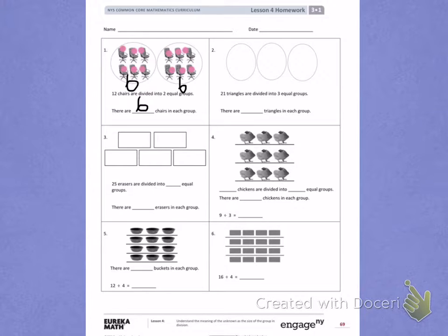Number 2. 21 triangles are divided into three equal groups. So I have 21 triangles that I am dividing equally into three groups. I will count to 21, placing one triangle into each group until I have no more.